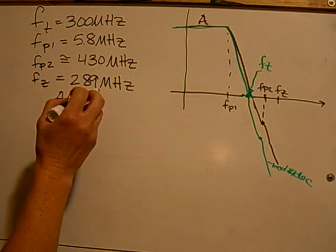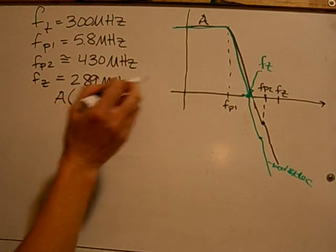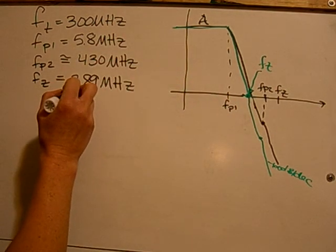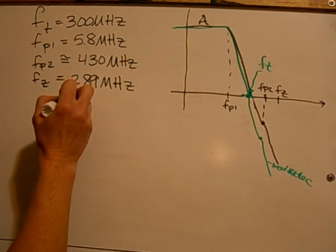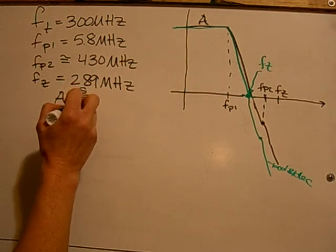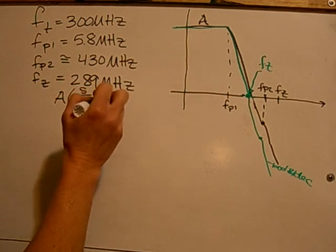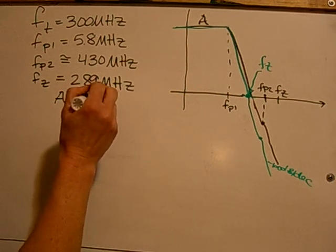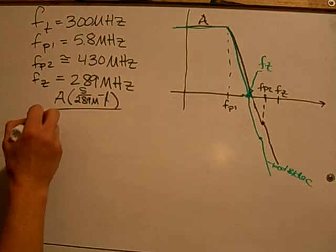It will have a zero, which is a positive zero, so it will actually be the form S over 289 MHz, minus one instead of plus one.